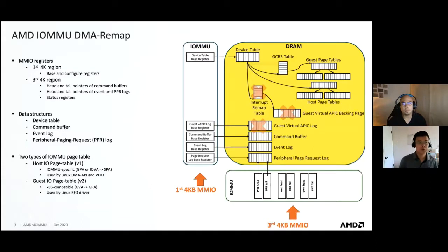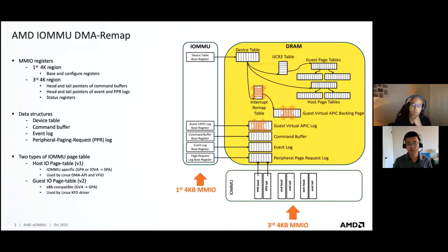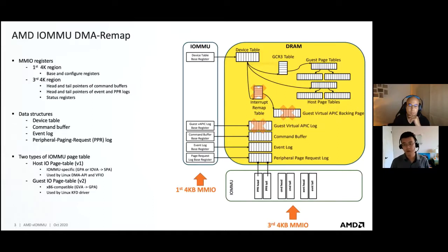This slide shows the AMD IOMMU design. As you can see on the right-hand side in the diagram, the hardware uses many different data structures for IOMMU management. The main registers are inside two 4KB MMIO regions. The first 4KB contains, for example, base and config registers. Those registers point to the starting address of those data structures. The second 4KB MMIO region contains head and tail registers that point into those data structures, for example, the command buffer and PPR logs.